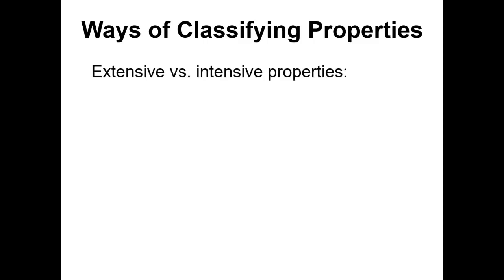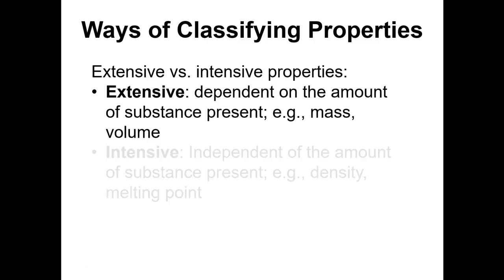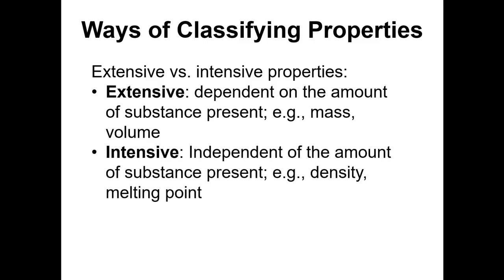There are a couple of different ways of classifying properties. The first is extensive versus intensive — it's good to know these definitions. An extensive property depends on how much of the substance you've got. Mass and volume are two classic examples of extensive properties: the more stuff you've got, the more mass there is; the more stuff you've got, the greater the volume.